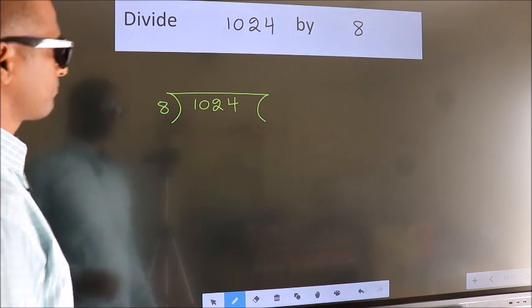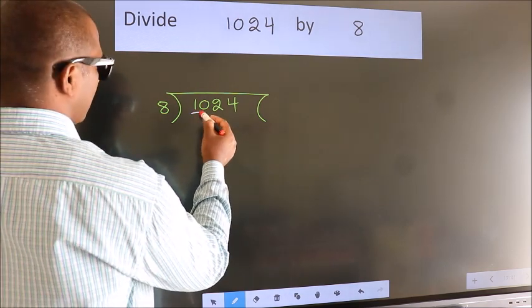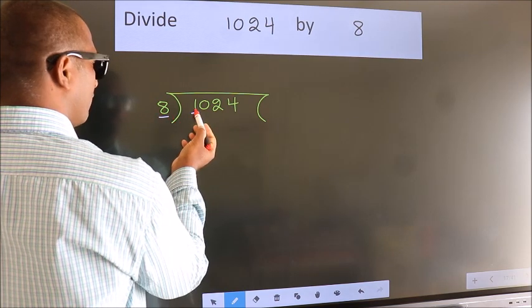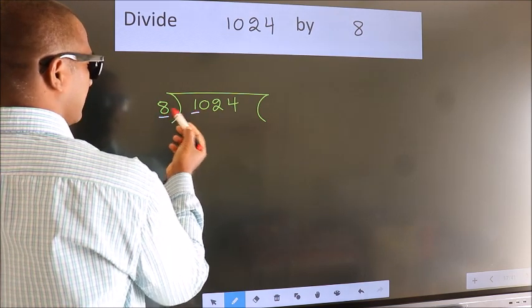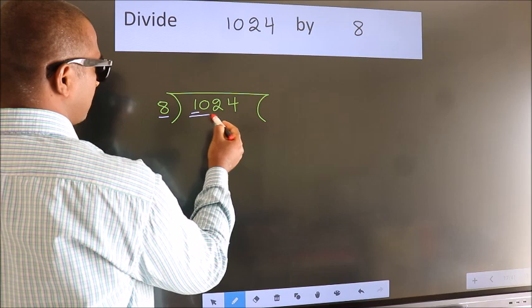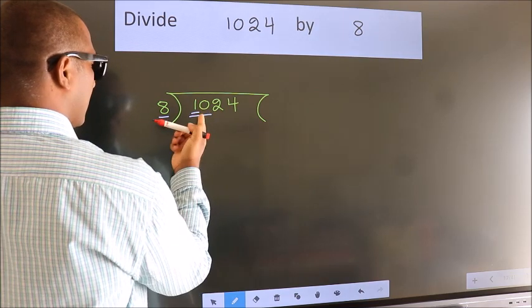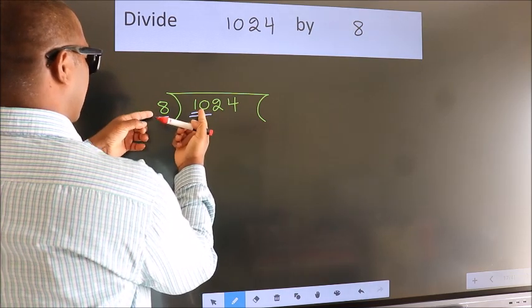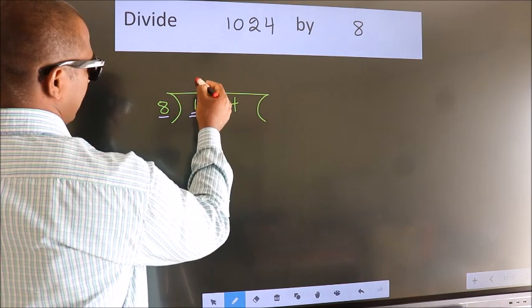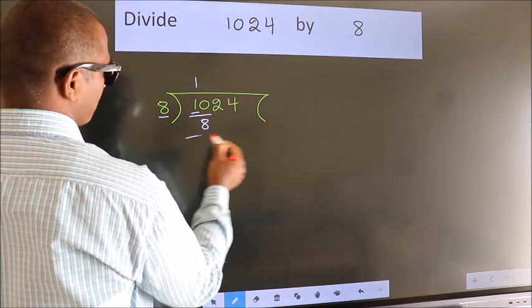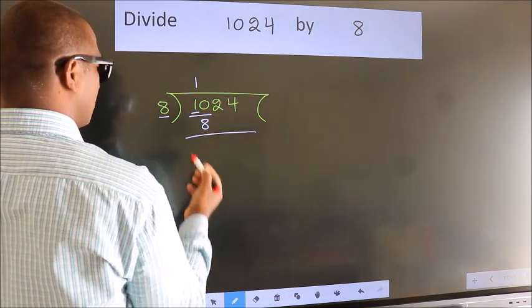Next. Here we have 1, here 8. 1 is smaller than 8, so we should take 2 numbers: 10. A number close to 10 in the 8 table is 8 once 8. Now we should subtract.